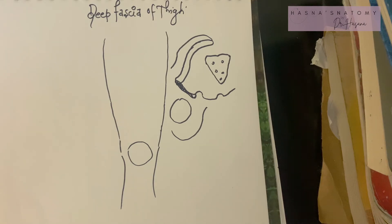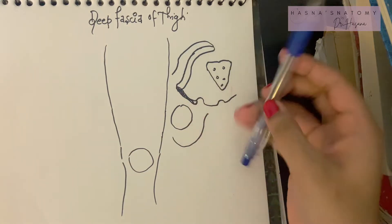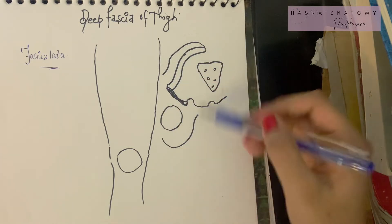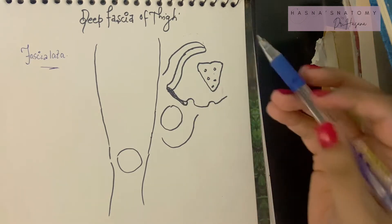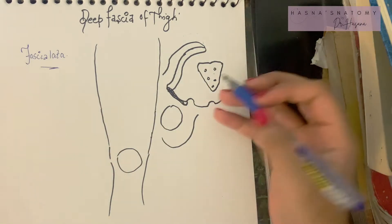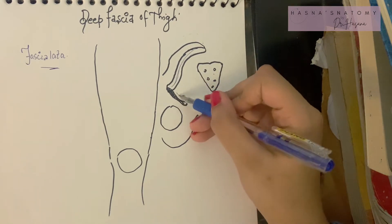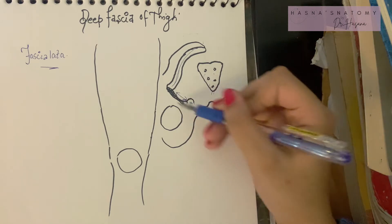The deep fascia of the thigh is a tough fibrous sheath that envelops the whole of the thigh like a sleeve — a very tough layer covering your entire thigh. Superiorly, the fascia lata extends laterally from the iliac crest, medially from the pubic tubercle, anteriorly from the inguinal ligament, and posteriorly from the sacrum and gluteal region, running down from there.